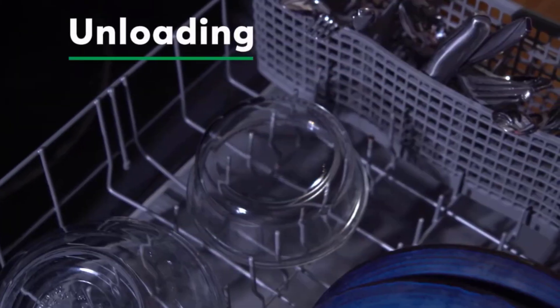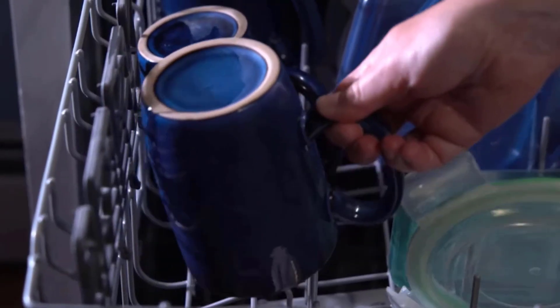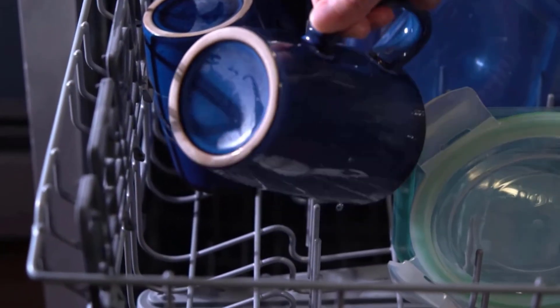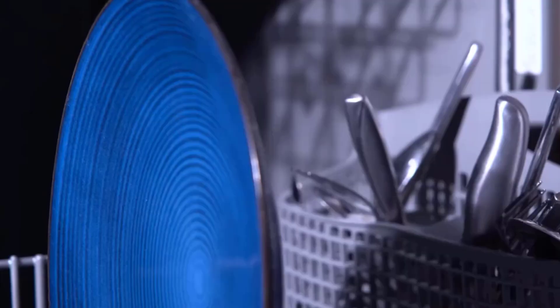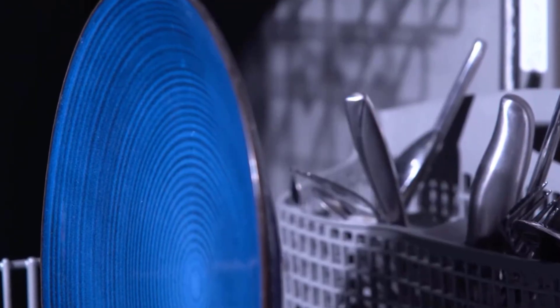When it's time to unload, empty the bottom rack first. Otherwise, water that collects on the surfaces of mugs and glasses in the top rack will spill onto the plates, pots, and dishes below.